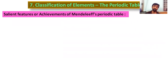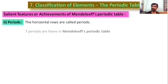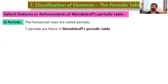Next, periods. Periods are horizontal rows, and elements within the same period are dissimilar in their characteristic properties. There are 7 periods in Mendeleev's periodic table.